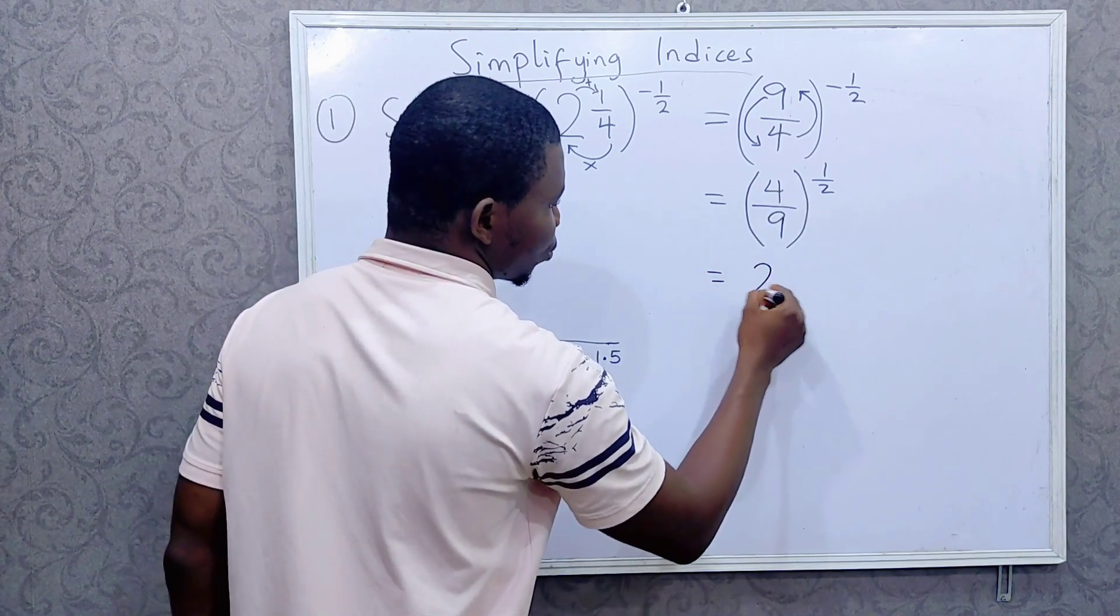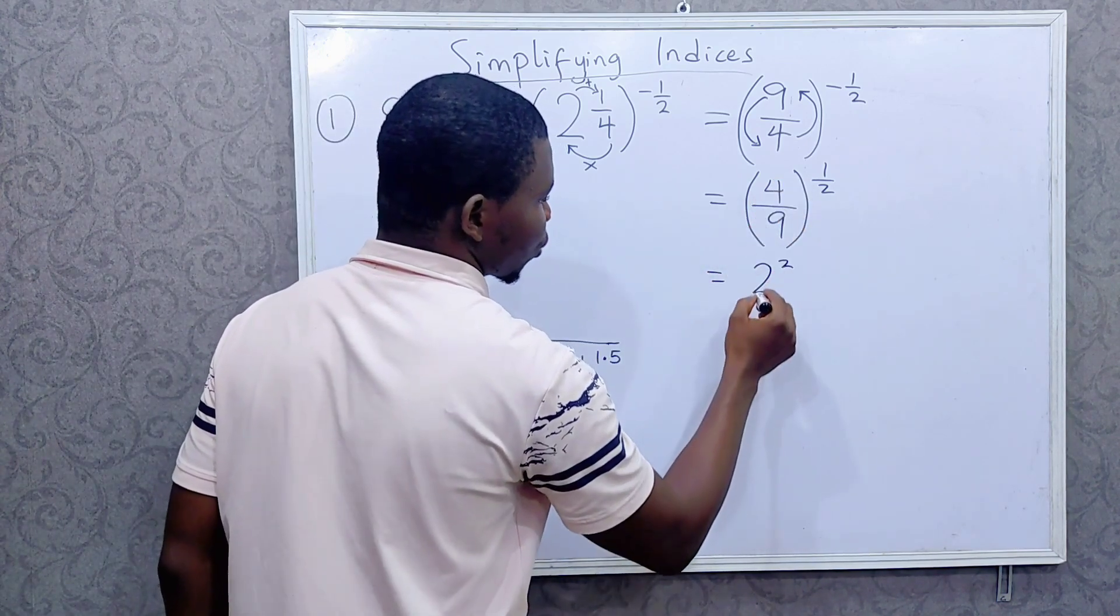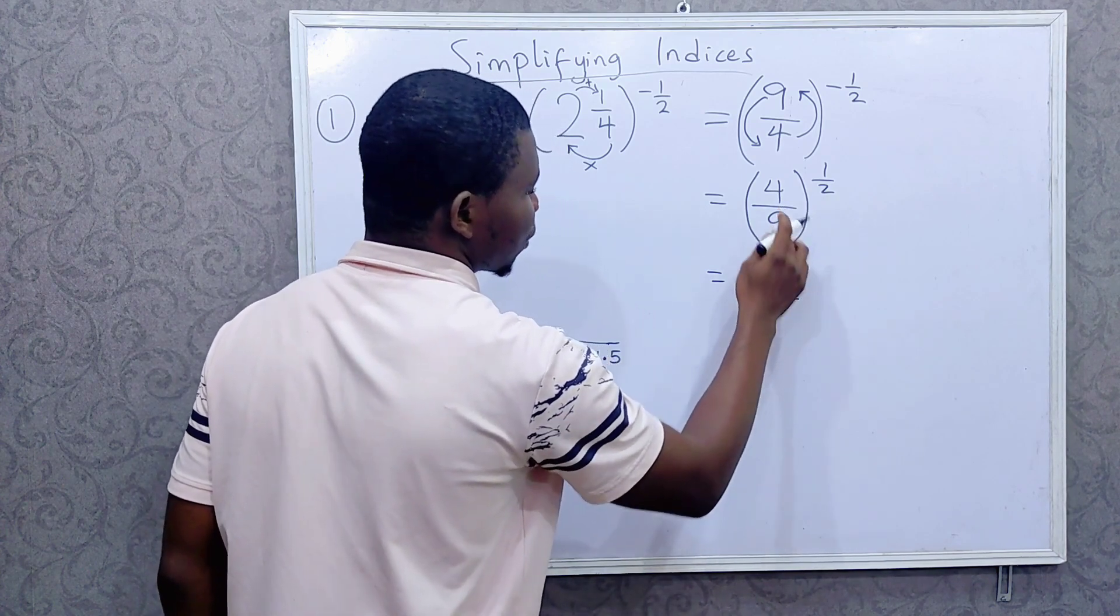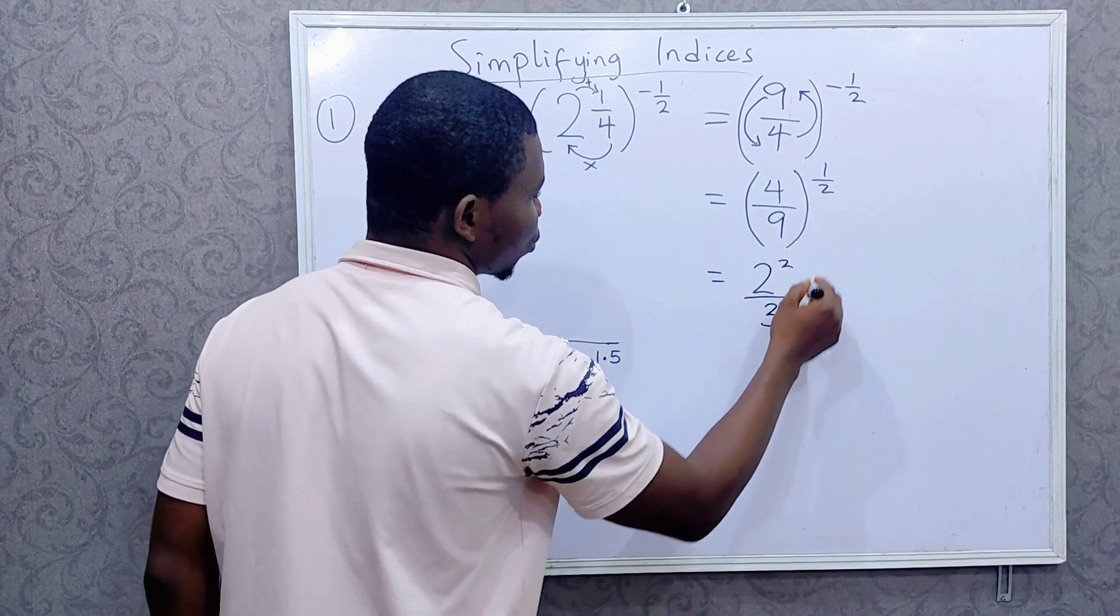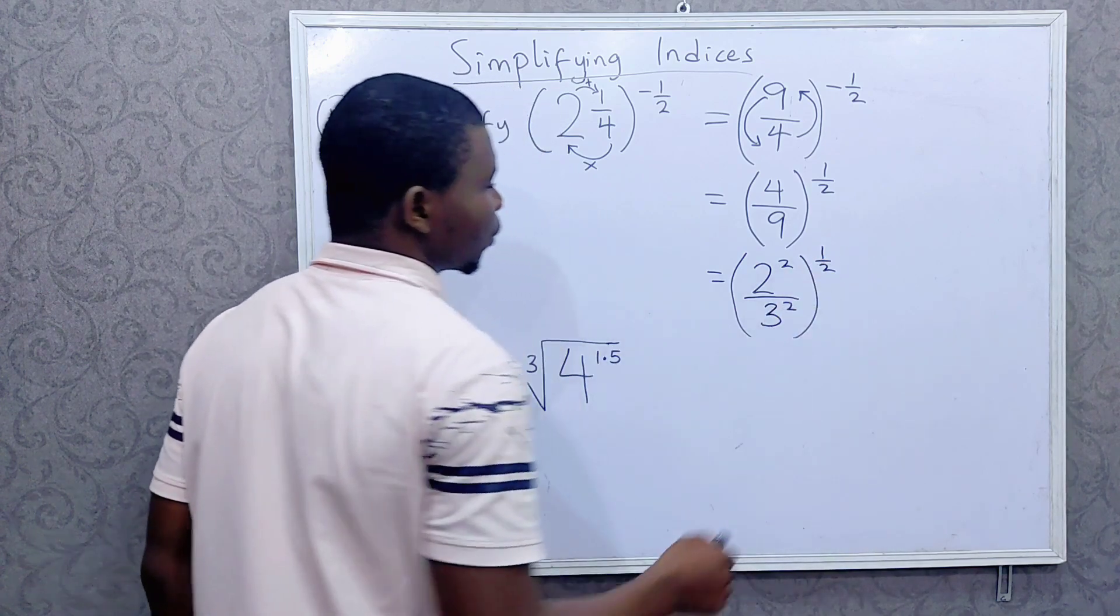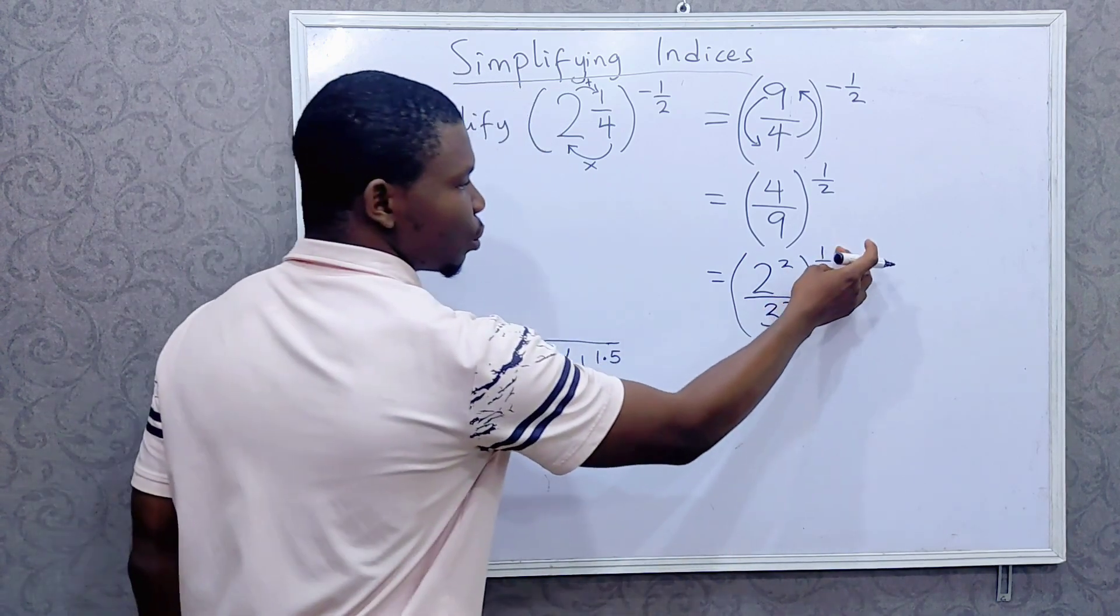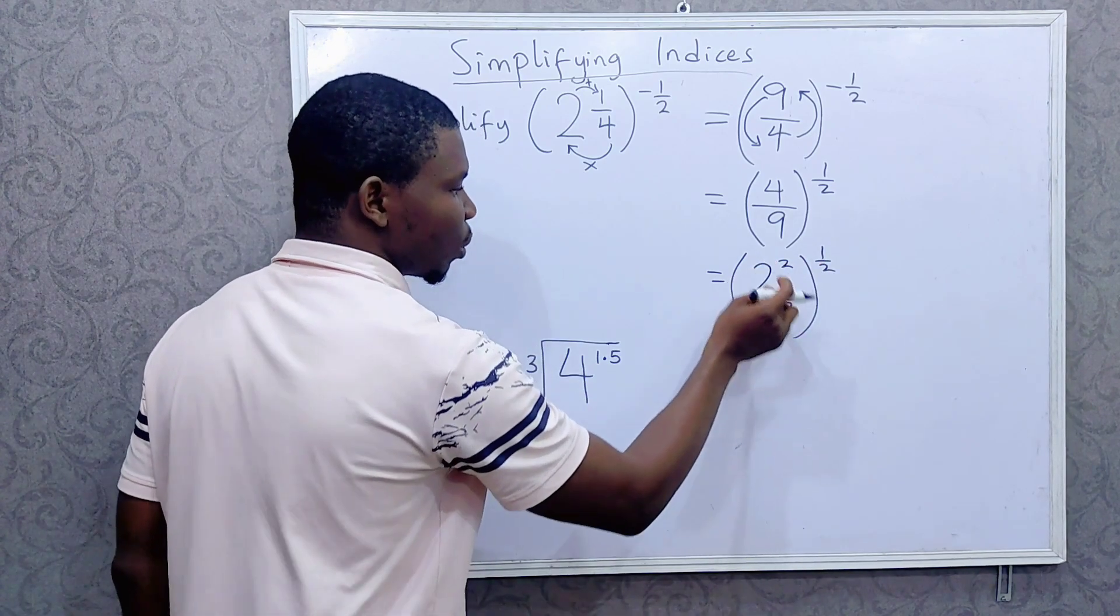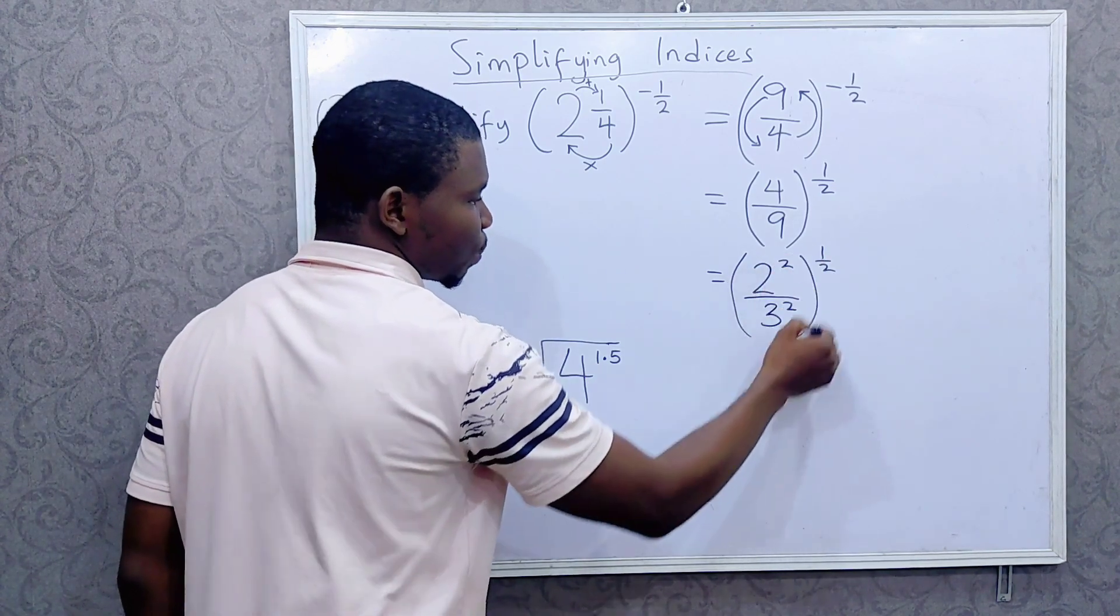Now I can write this as 2 raised to power 2. 4 is the same as 2 raised to power 2. 9 is the same as 3 raised to power 2. And this is all raised to power 1 over 2. This 1 over 2, this power is good for the numerator and the denominator because of these brackets.